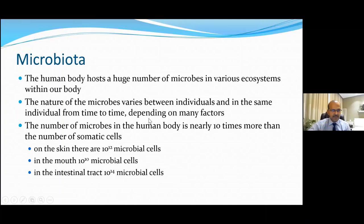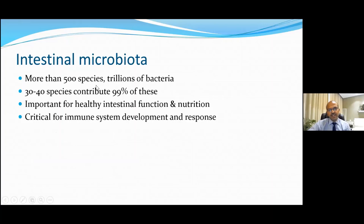The number of microbes in the human body is nearly 10 times that of the somatic cells. On the skin there are 10 to the power of 12; in the mouth, 10 to the power of 10; in the intestinal tract, a maximum of 10 to the power of 14; and in the genital tract, similar numbers to the skin. There are more than 500 species, most of them anaerobic, and there are trillions of bacteria.